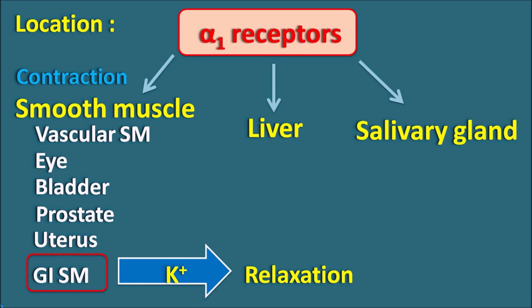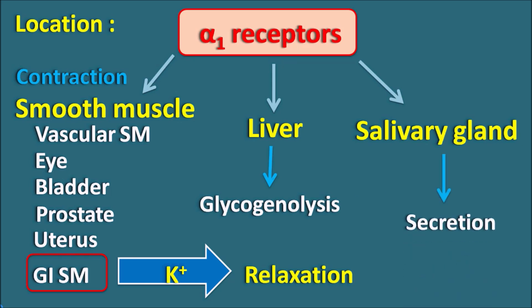What is the role of alpha-1 receptors on the liver? Within the liver, they can increase glycogenolysis — the breakdown of glycogen to glucose. On the salivary glands, because they are excitatory in nature, they produce secretion of saliva. So these are the three physiological roles of alpha-1 receptors: contraction of all smooth muscles except the GI smooth muscle where they produce relaxation, increase in glycogenolysis in the liver, and increased secretion from the salivary glands.